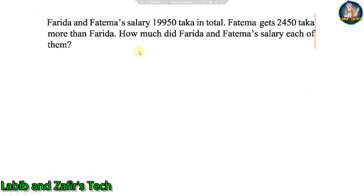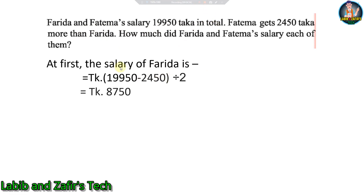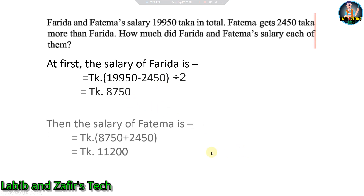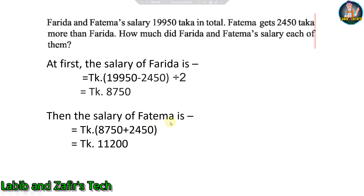Next problem: Furida and Fatima's total salary is 19,950 taka, and Fatima earns 2450 taka more than Furida. Solution: Furida's salary = (19,950 − 2450) ÷ 2 = 8750 taka. Fatima's salary = 8750 + 2450 = 11,200 taka.